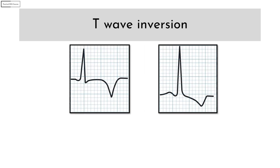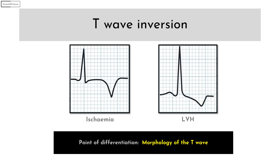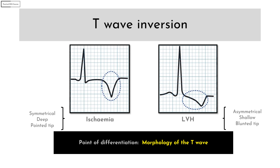There are two important DDs for T wave inversions: ischemia and LVH. There are three points of differentiation based on T wave morphology. If the T wave is symmetrical, deep, and has a pointy tip, it is more likely to be ischemia. If the T wave is asymmetrical, shallow, and has a blunted tip, it is more likely to be due to LVH. These points can also be used to differentiate ischemic T wave inversion from inversions due to secondary repolarization abnormalities like LBBB, RBBB, RVH, etc.